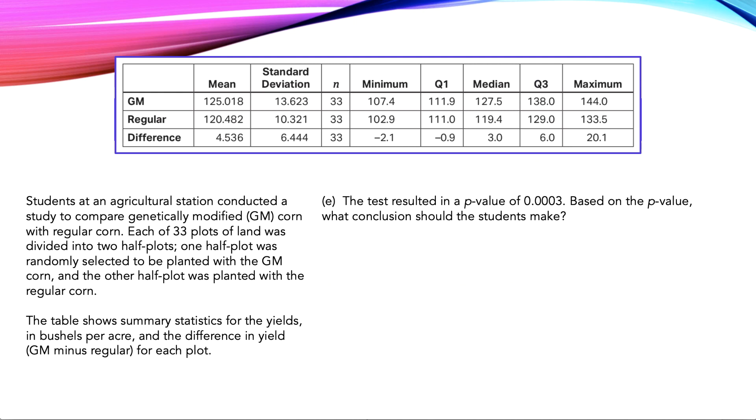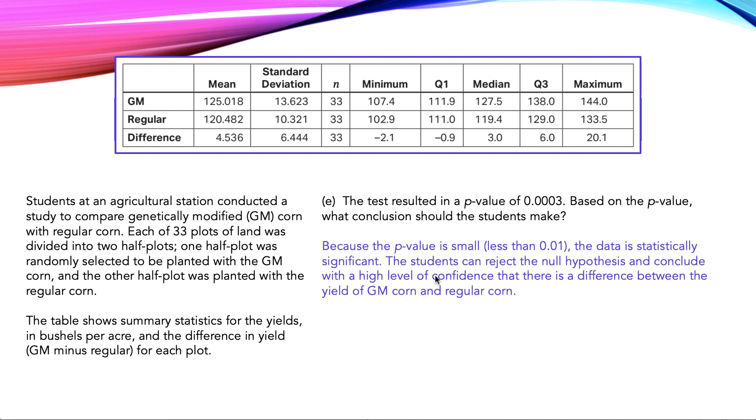In Part E, we're told the test resulted in a p-value of 0.0003. Based on that p-value, what conclusions should the students make? Remember that when you have a very tiny p-value, that's when you reject the null hypothesis. Usually if it's below 5%, or maybe 1%, depending on the confidence level they give you. Here's the answer I came up with: Because the p-value is small, less than 1%, the data is statistically significant. The students can reject the null hypothesis and conclude with a high level of confidence that there is a difference between the yield of GM corn and regular corn.